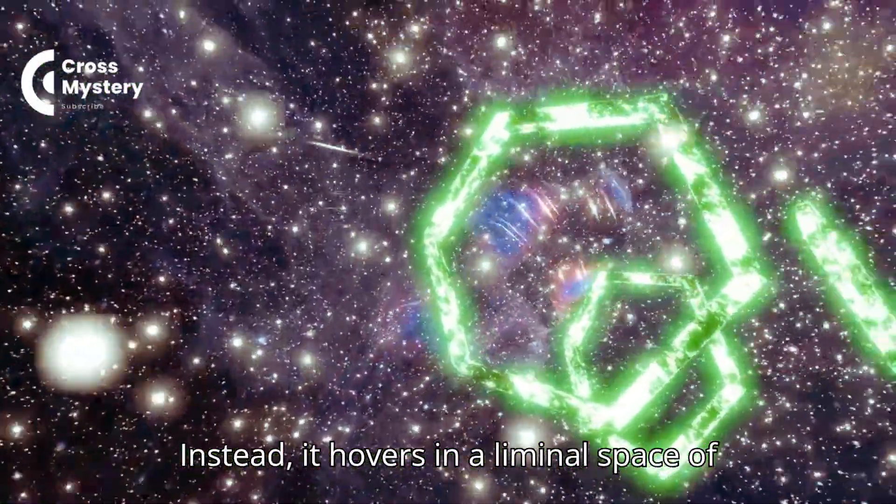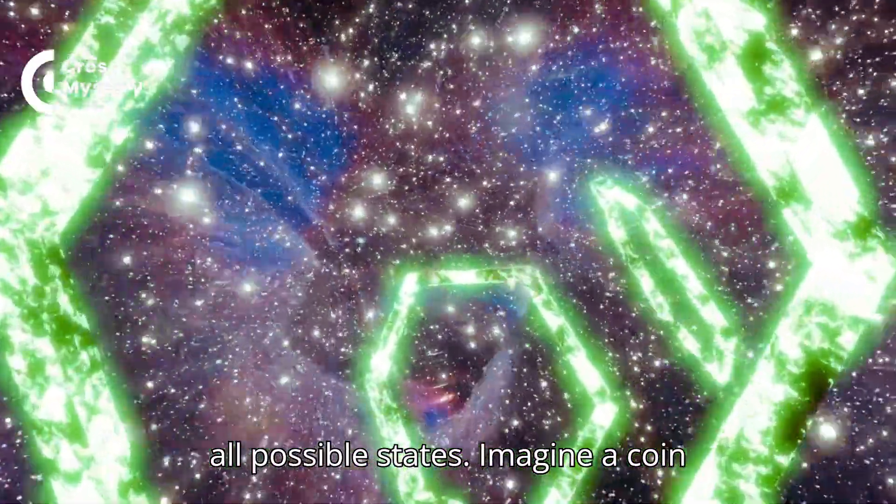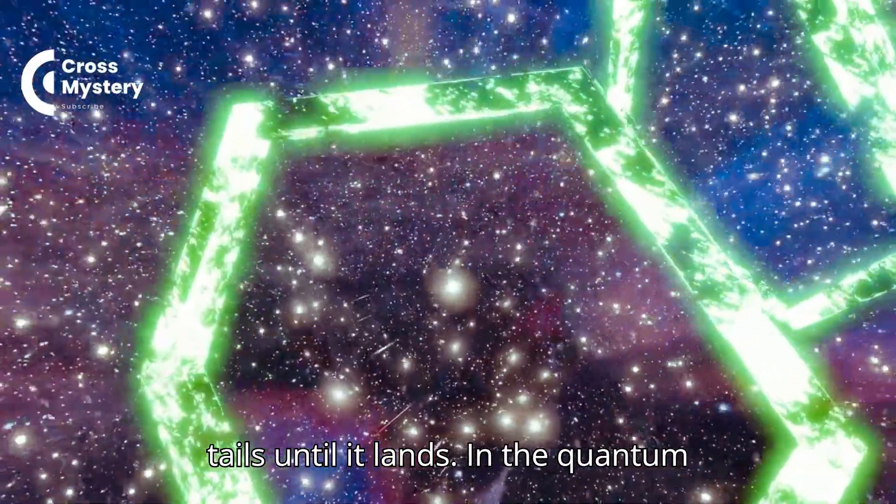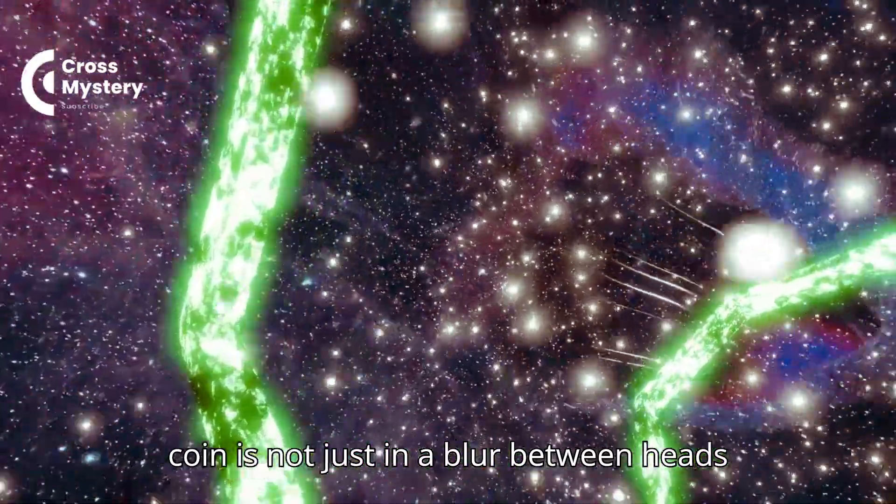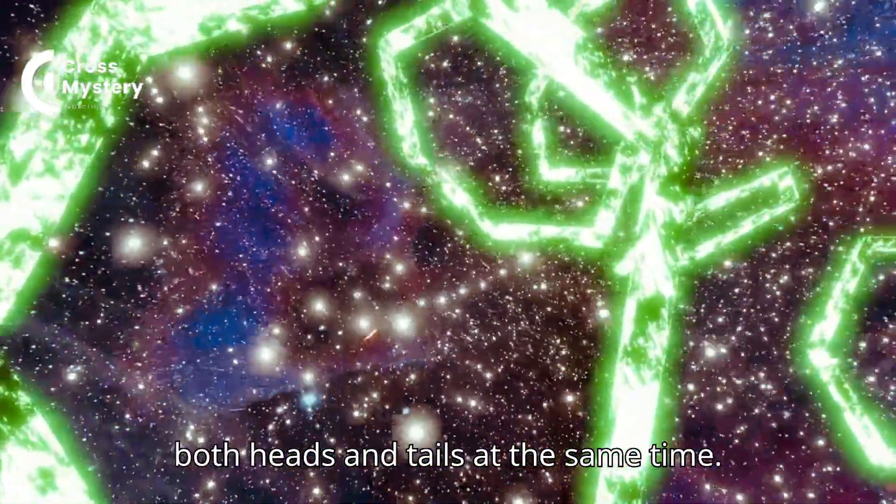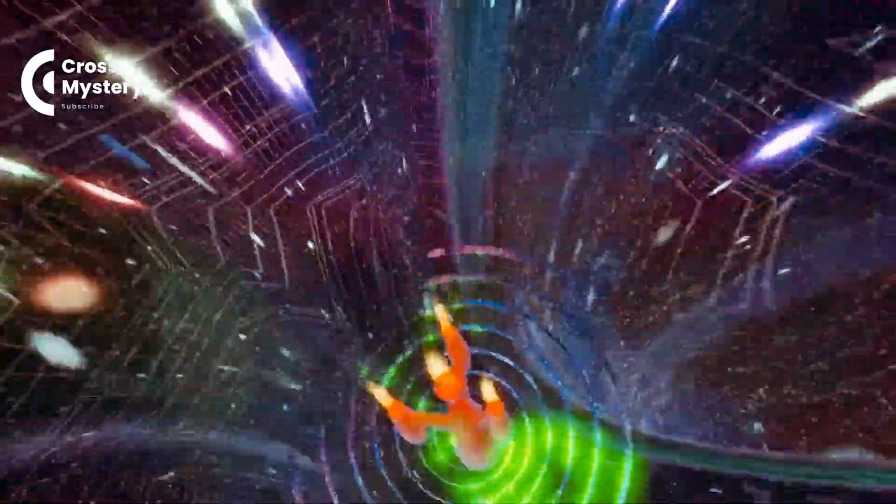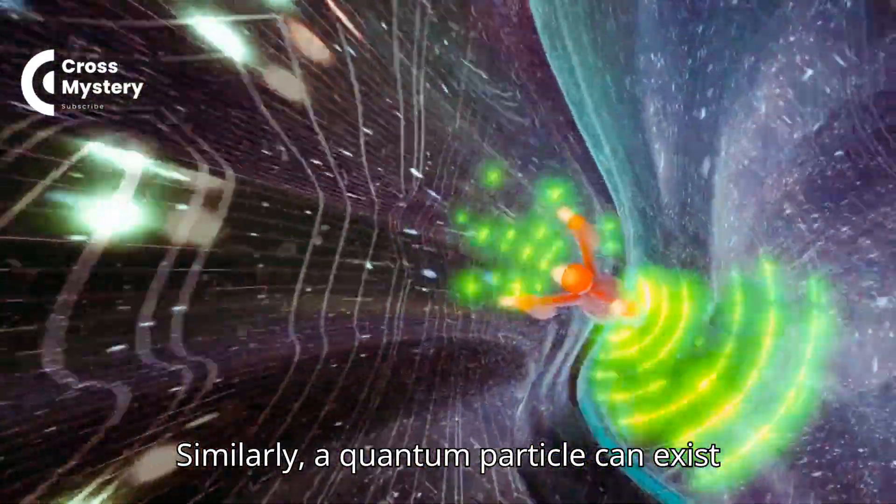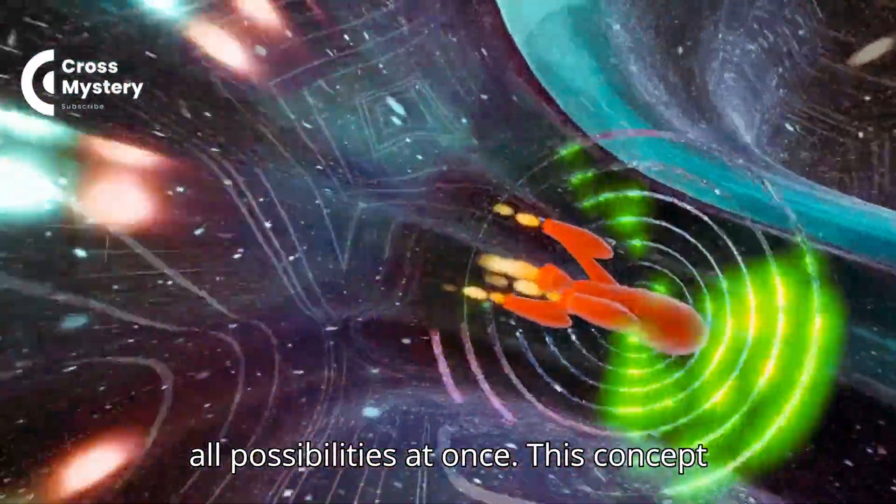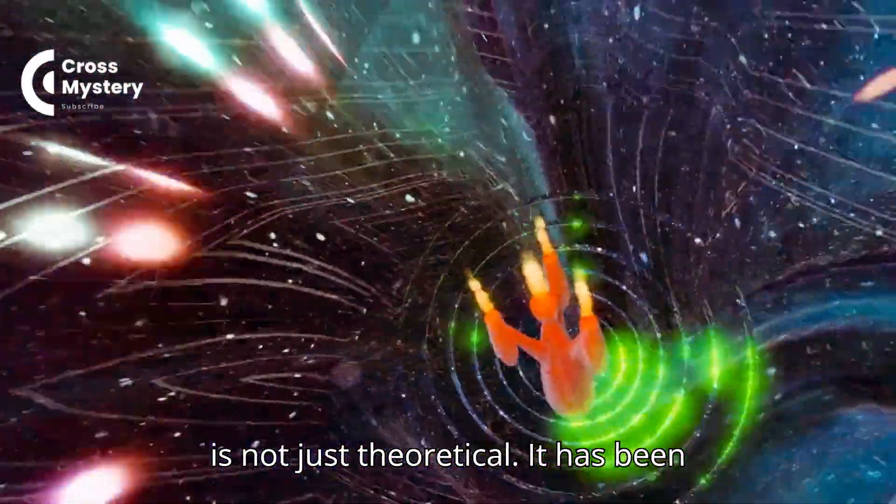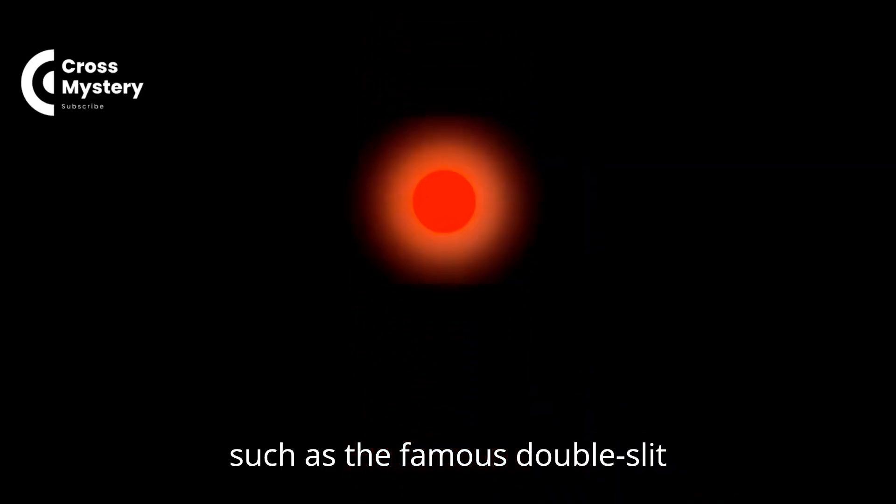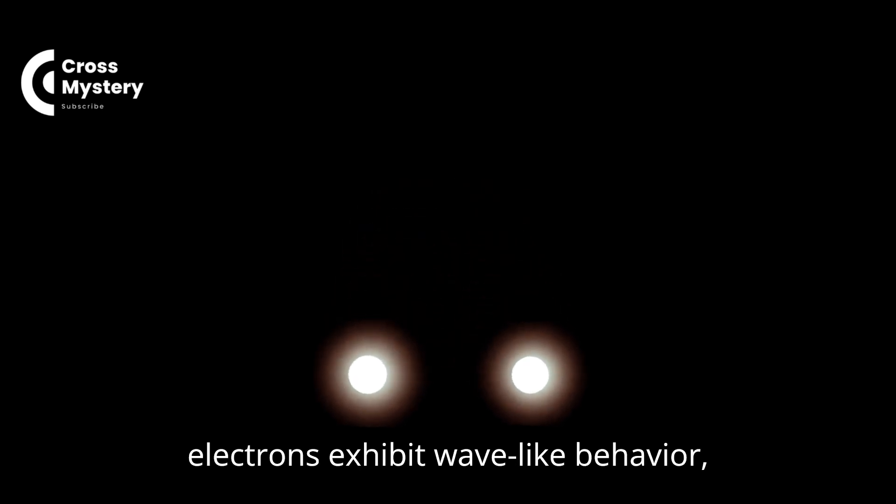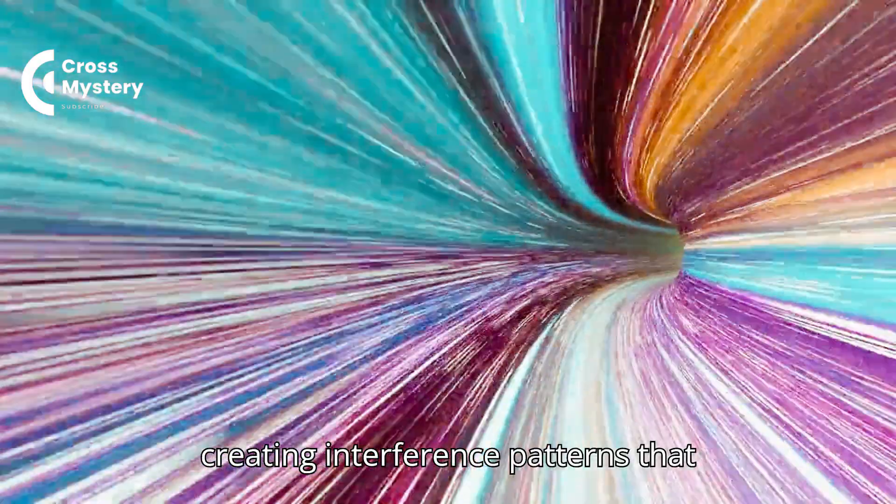This means that until we observe or measure the object, it doesn't settle into a single state. Instead, it hovers in a liminal space of all possible states. Imagine a coin spinning in the air, neither heads nor tails until it lands. In the quantum realm, this analogy extends further. The coin is not just in a blur between heads and tails; it is in a state where it is both heads and tails at the same time. Similarly, a quantum particle can exist in a superposition of states, embodying all possibilities at once. This concept has been demonstrated in numerous experiments, such as the famous double-slit experiment, where particles like electrons exhibit wave-like behavior, creating interference patterns that suggest they traverse multiple paths simultaneously.